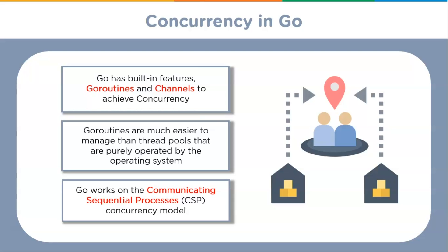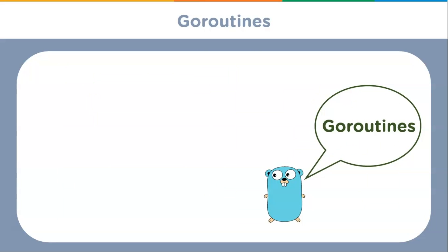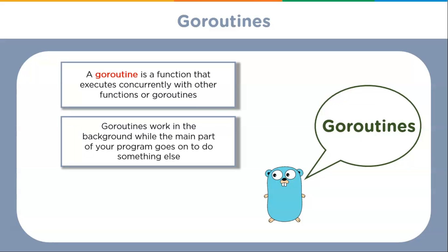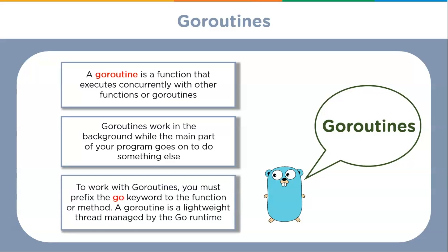Now we will understand how goroutines and channels operate in the concurrency model. First we'll cover goroutines. A goroutine is a function that executes concurrently with other functions or goroutines. Goroutines work in the background while the main part of your program goes on to do something else. Goroutines are not OS threads. To work with a goroutine you have to prefix the go keyword to the function or method. A goroutine is a lightweight thread managed by the Go runtime.